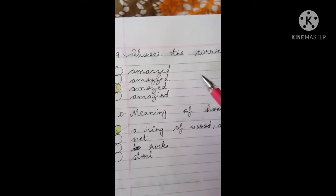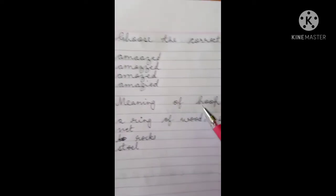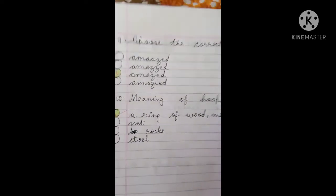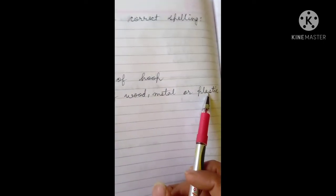Next question number nine. Choose the correct spelling of amazed. It is A-M-A-Z-E-D, amazed. What is the meaning of hoop? The meaning of hoop is a ring of wood, metal or plastic.